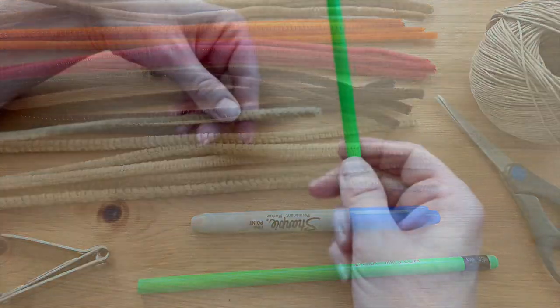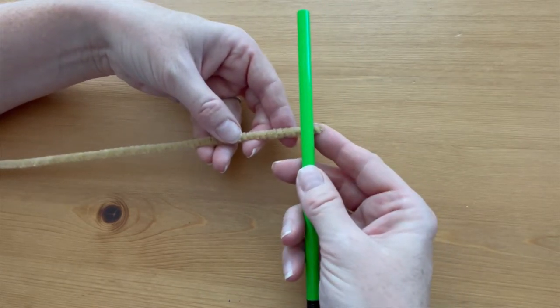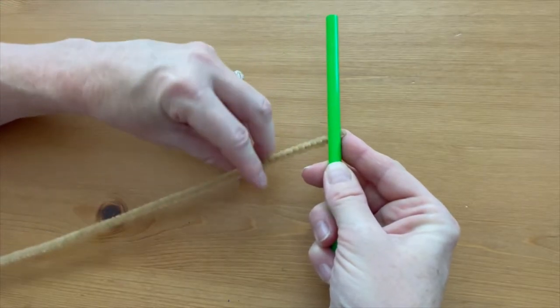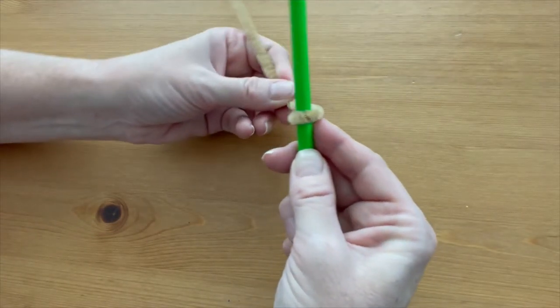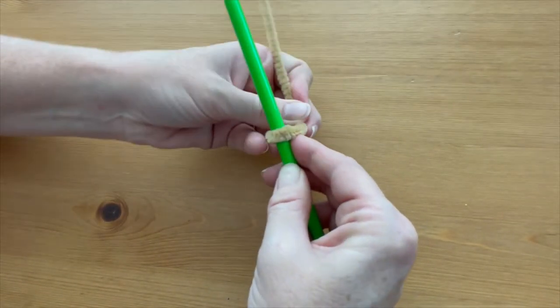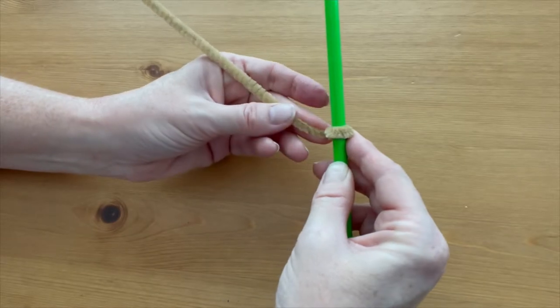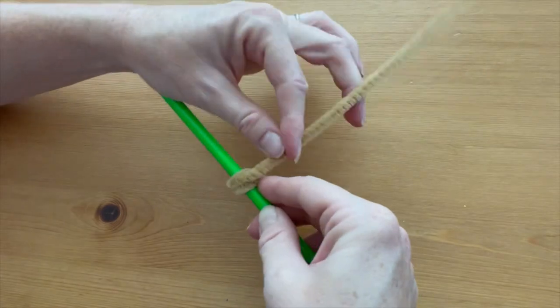To make the bottom part of the acorn, hold one of the tan pipe cleaners up against a pencil and start spiraling it around the pencil. Make one loop go right on top of the other for two loops, and then do the same thing—go around once and twice right on top of the other, and a third time.